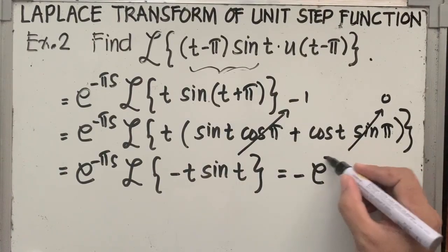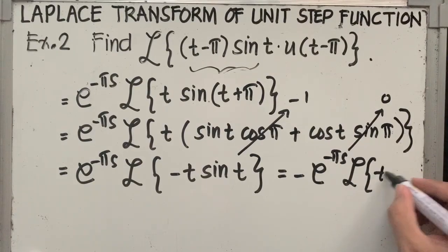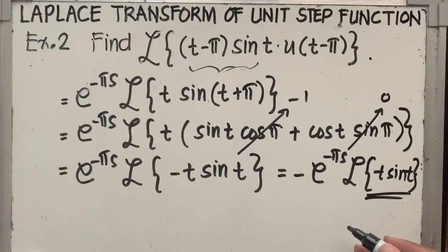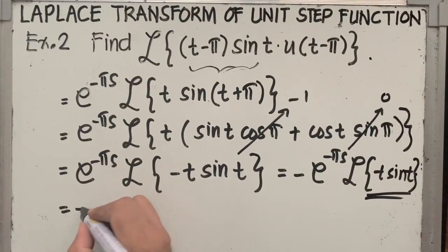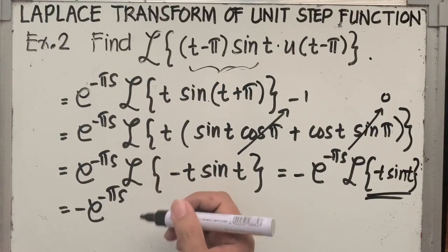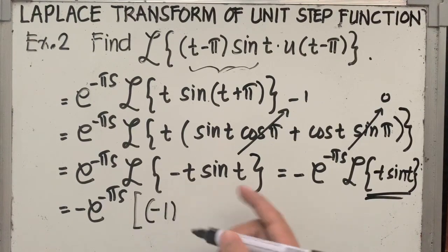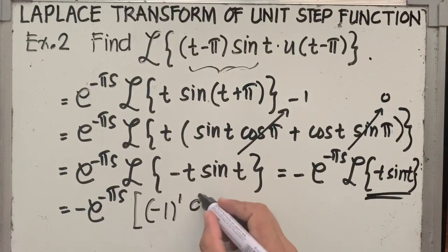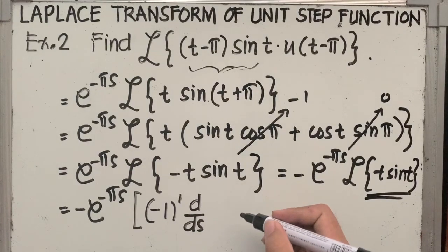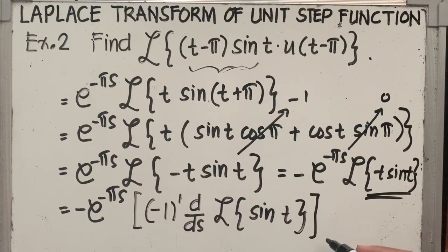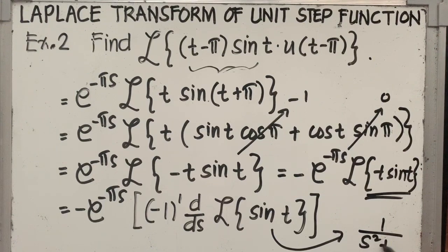Using the multiplication-by-t property, put negative before the operator. Then take the Laplace transform of t sine of t using differentiation of the Laplace transform. Copy negative e raised to minus pi s. The Laplace of t sine of t becomes negative 1 raised to 1 times the first derivative of the Laplace of sine of t, which is the first derivative of F of s. To find F of s, take the Laplace of sine of t, which is 1 over s squared plus 1.